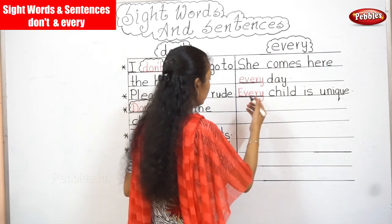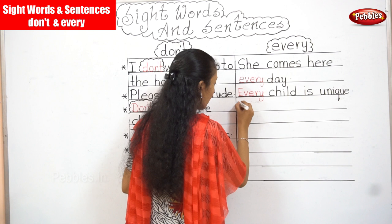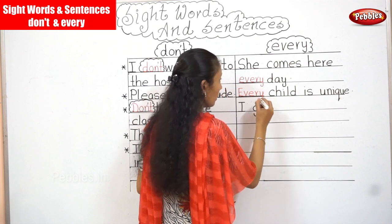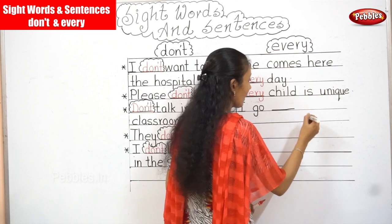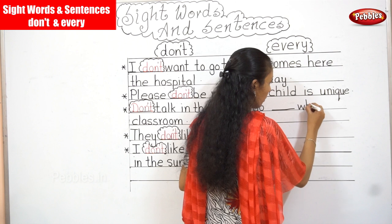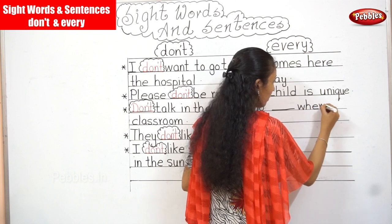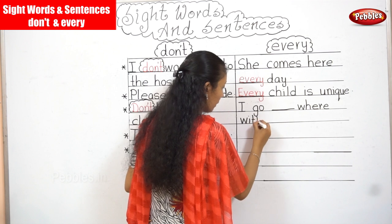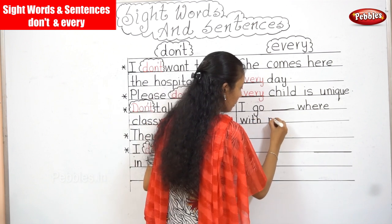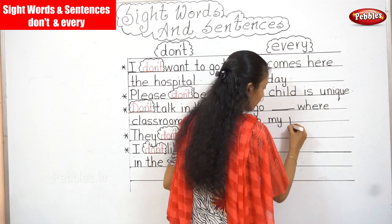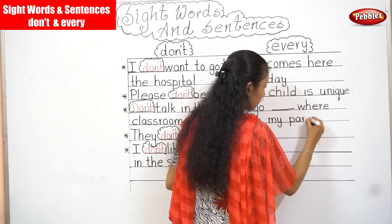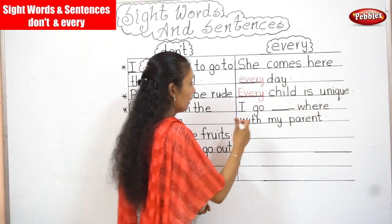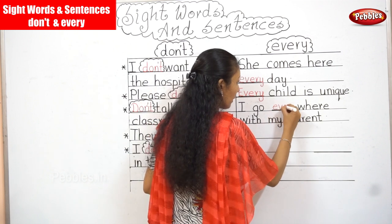Next one: I go — where with my parents. What is the word? Every. I go everywhere with my parents.